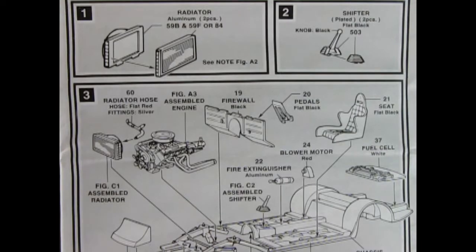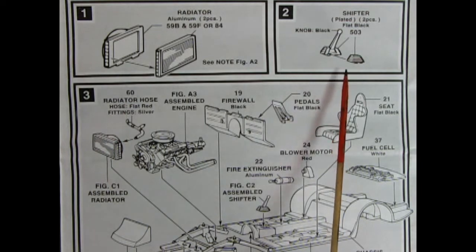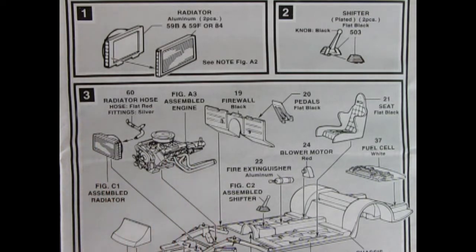Our next panel shows the chassis assembly. We have a two-piece radiator gluing together and a two-piece shifter knob here. And then we've got our nice racing seat going on our chassis in panel three. Engine drops in, radiator duct goes in front, there's a transmission mount goes up underneath, and then our engine will hook in. And then we've got our radiator hoses going into the radiator and on top of the engine block. We've got our firewall, our pedals, our seat, fuel cell, blower motor, fire extinguisher, and the shifter. All this goes onto our floor.